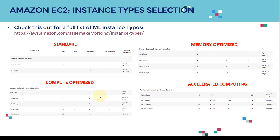Let's take a look at the various instance types. First, there is what we call standard. There is memory optimized, there is compute optimized, and there is accelerated computing or GPUs.